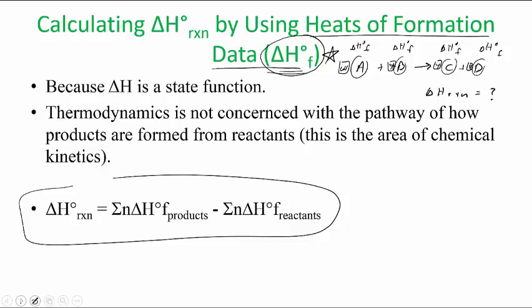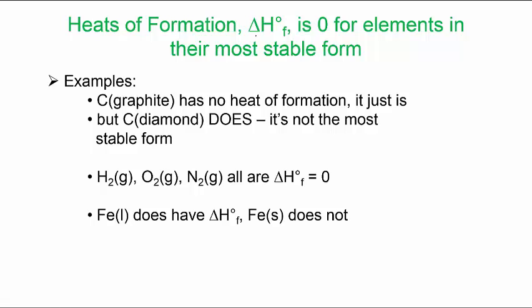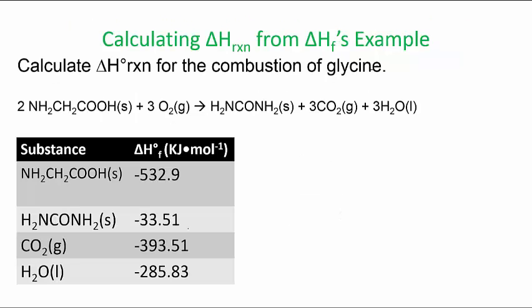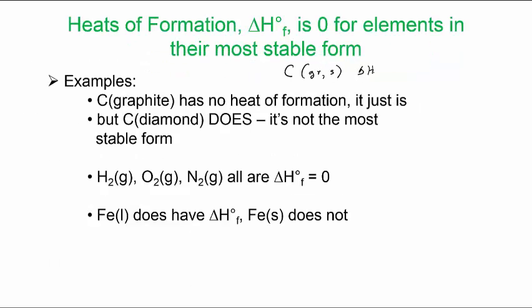One very quick note here before we do the problem is heats of formation is zero for elements in their most stable form. So for example, and this is actually related to the previous tutorial, if carbon is graphite and solid, graphite comma solid, the heat of formation for this substance is zero. You will not find this value in the appendix because it's zero. Everyone knows it's zero, so they don't list it as zero.